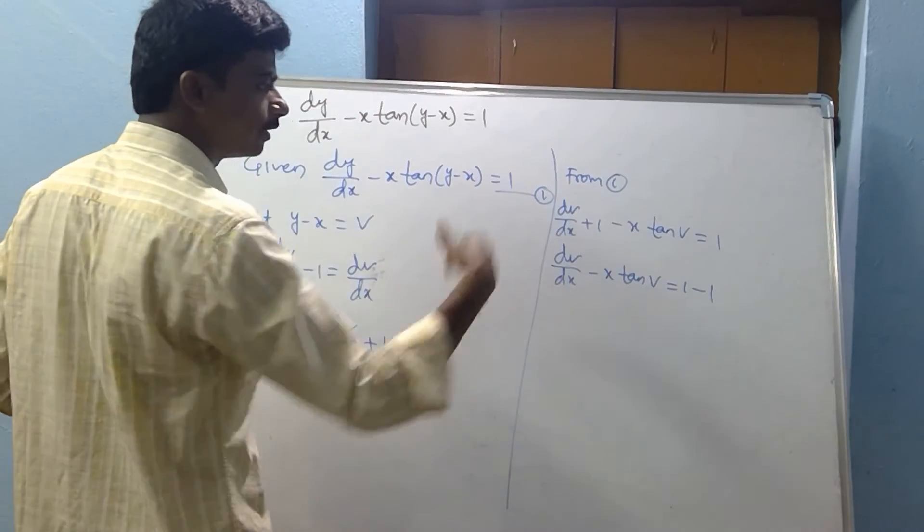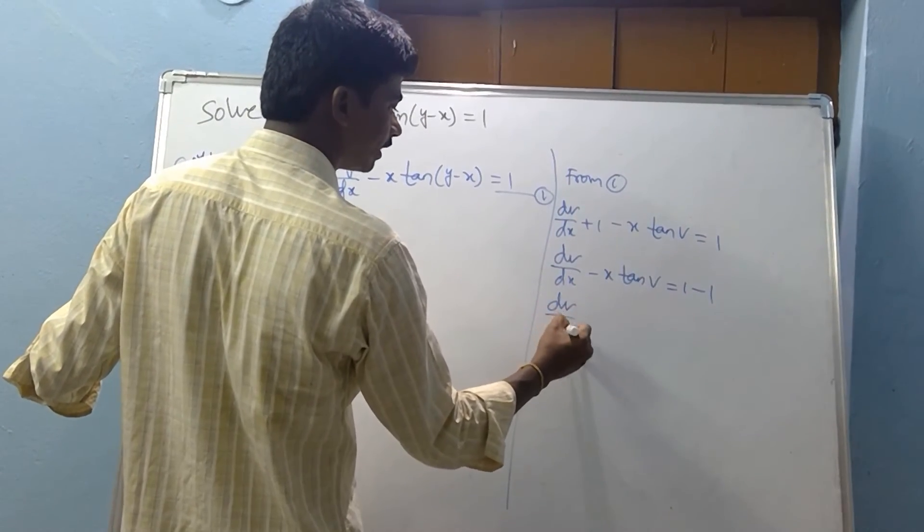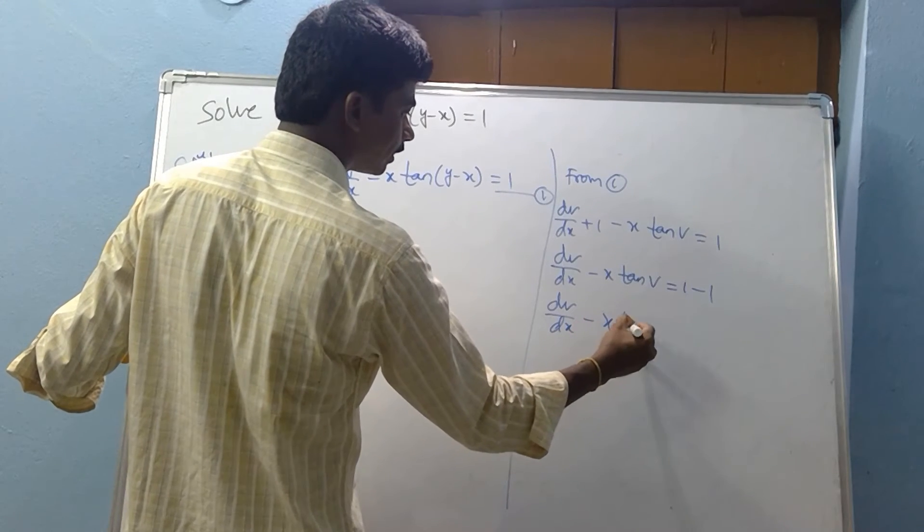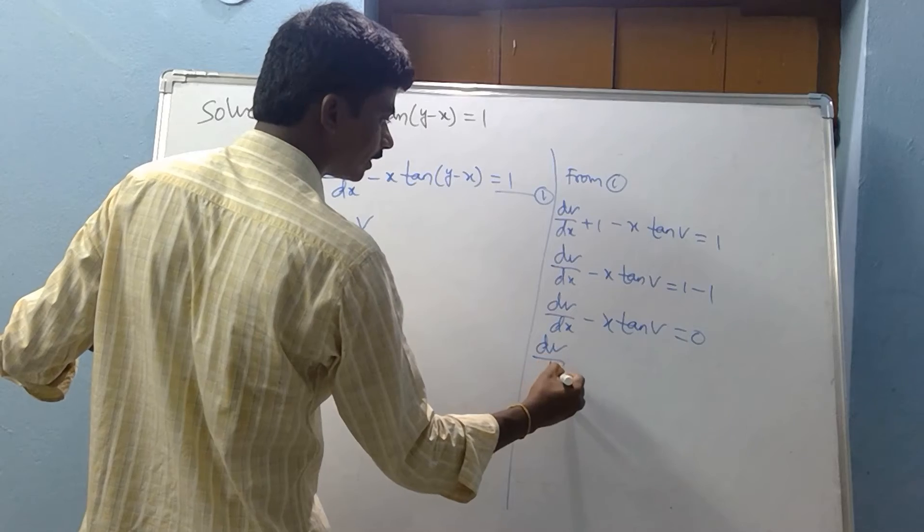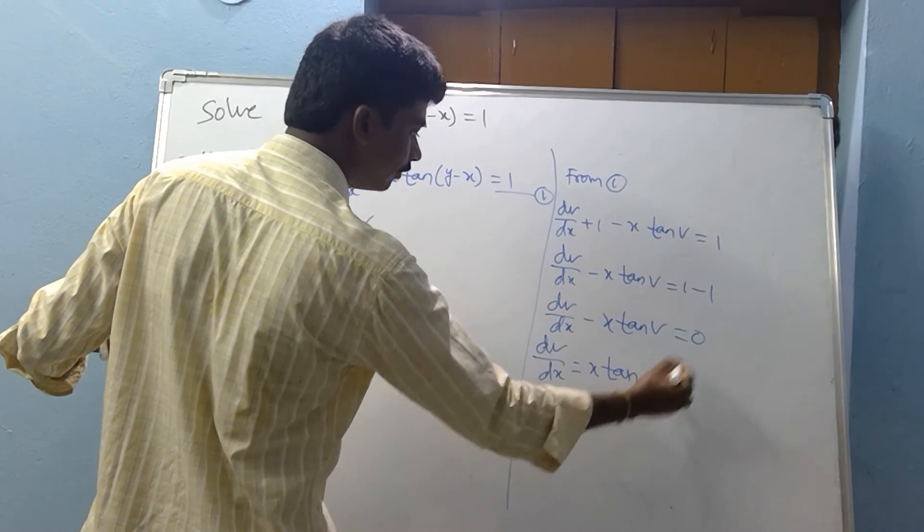Minus 1, 1 taken to right side. The term will become 0. So dv/dx minus x tan v equal to 0. Therefore dv/dx equal to x tan v.